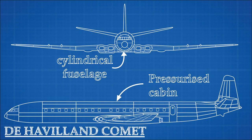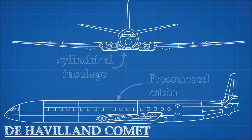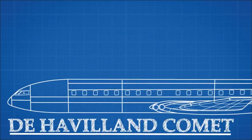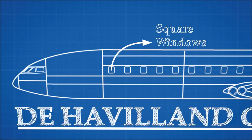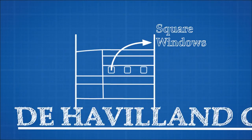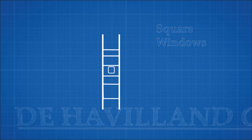But one design flaw was not corrected when cabin pressurisation was first introduced. The windows remained square — so why is this a problem?